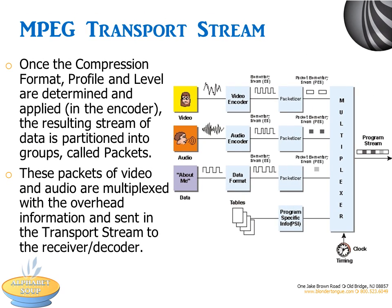Once the compression format, profile, and level are determined and applied, the resulting stream of data is partitioned into groups called packets. A packet is the basic unit of data in a transport stream. These packets of audio and video are multiplexed with the overhead information and sent in the transport stream to the receiver for decoding. The packetized transport and multiplexed layers of the ATSC system provide a flexible framework for conveying television program and other digital information to customers.